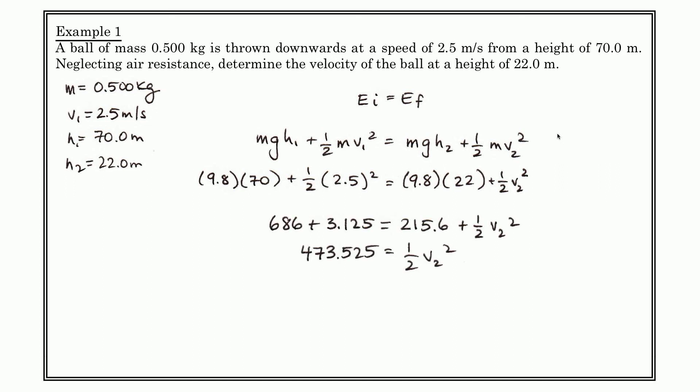But here, if we do the mathematics and we simplify some of these terms, and we rearrange, and then we solve, we get that V2 is equal to 31 meters per second. Of course, that would be in the downwards direction. And so we basically solve for the speed of this ball at a height of 22 meters.